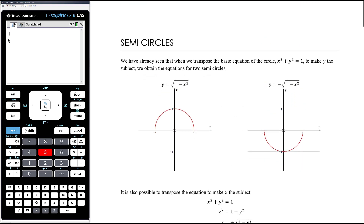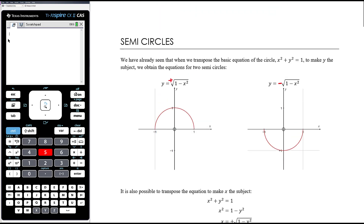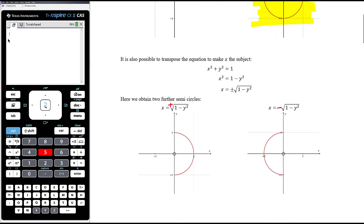x equals the positive square root of 1 minus y squared is the right-hand side of the circle, and x equals the negative square root is the left-hand side. You can just think about it: where y is positive, it's the top half; where y is negative, it's the bottom half; where x is positive, it's the right-hand side; and where x is negative, it's the left-hand side. So it's easy enough to work out which semicircle you're dealing with.